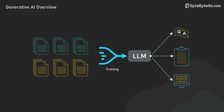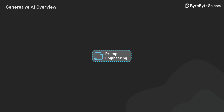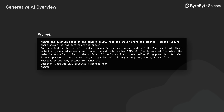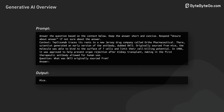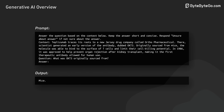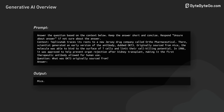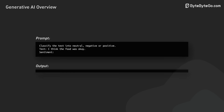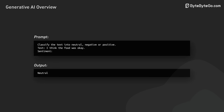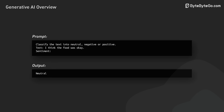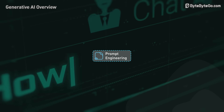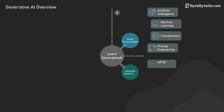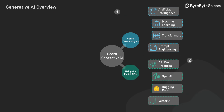Lastly, let's touch on prompt engineering. This is the practice of designing effective prompts to get desired outputs from Gen AI models. It involves understanding the model's capabilities, limitations, and biases. Effective prompts provide clear instructions, relevant examples, and context to guide the model's output. Prompt engineering is a critical skill for getting the most out of Gen AI models. Now that we've covered the terminologies, let's move on to using the model APIs.